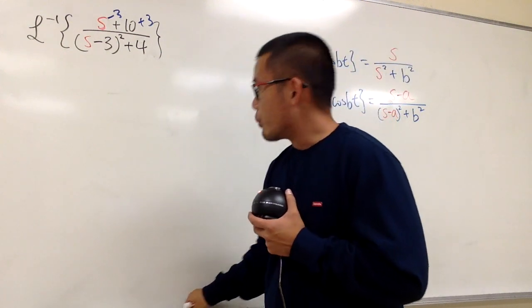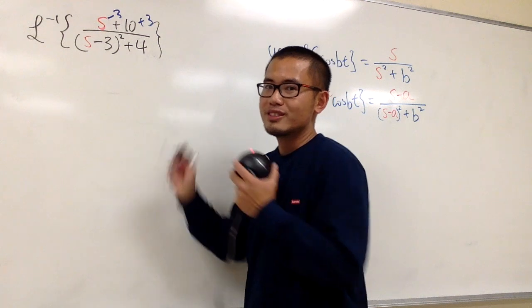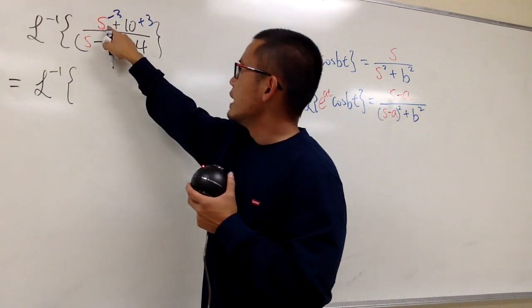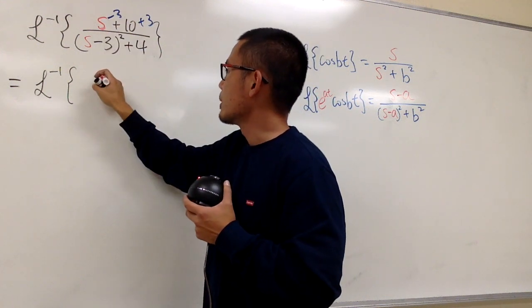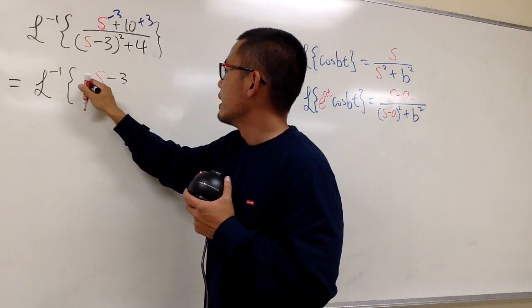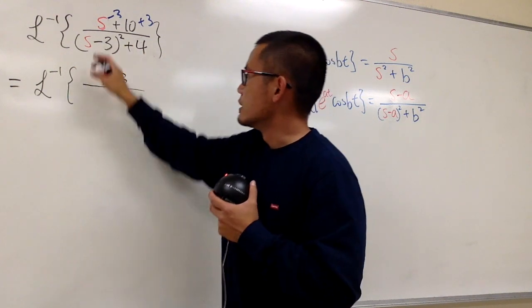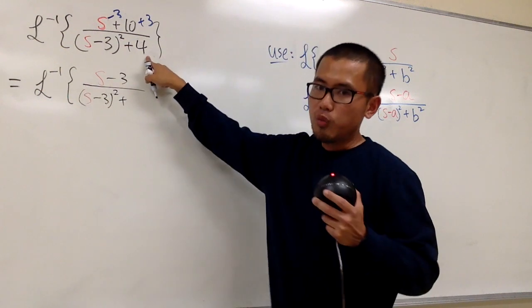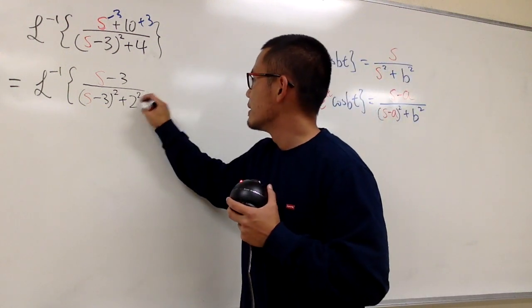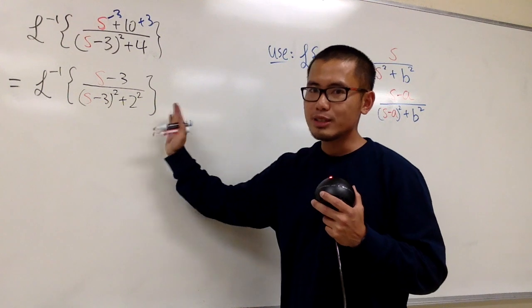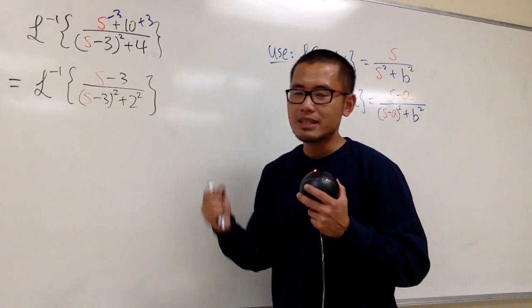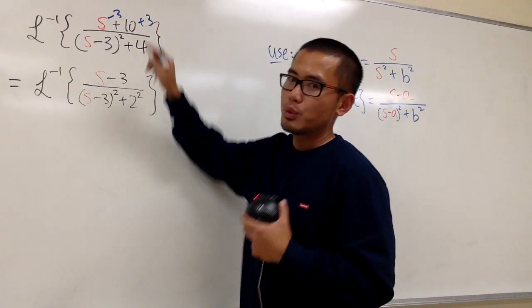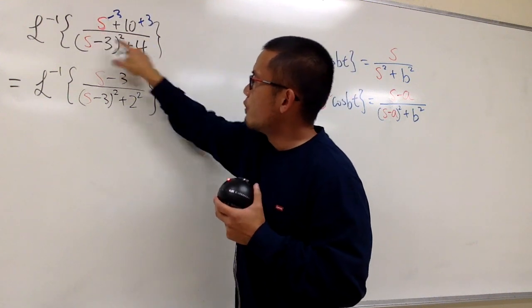Now I will break down the inverse Laplace and also the fractions inside. As we can see, this is going to be the inverse Laplace. Let's look at s minus 3 on the top as this one right here. I'll put it down: s minus 3, and then the denominator, (s minus 3) squared plus—for the 4, let's put it down as 2 squared, just like earlier. And remember, we can do so because inverse Laplace transform is linear. And next, this is 10 plus 3, which is 13.